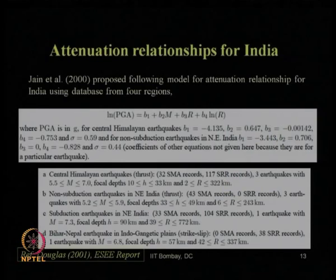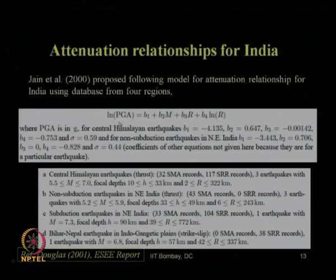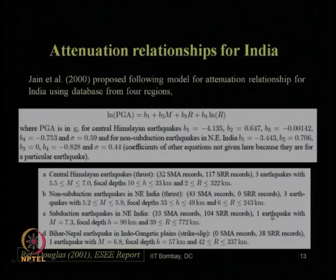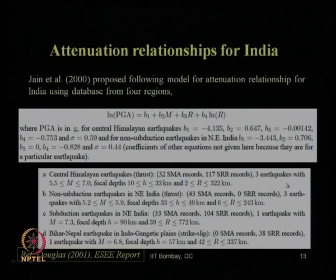Jain et al. in 2000 proposed an attenuation relationship for peak horizontal earthquake acceleration, with coefficients B1, B2, B3, B4 for four basic regions: the central Himalayan region with thrust-type faults, the non-subduction zone of northeast India with thrust-type faults, subduction earthquakes in north India (specific to one earthquake), and the Bihar-Nepal earthquake in the Indo-Gangetic plain with strike-slip faulting (also specific to one earthquake). The first two regions were developed using multiple earthquakes with many recorded data points.